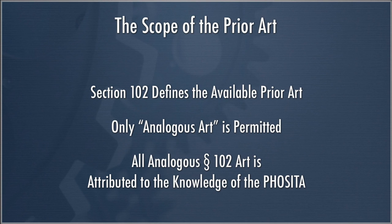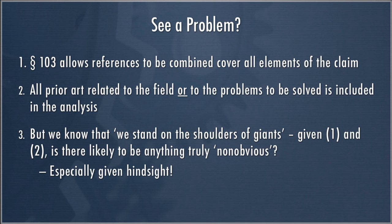Remembering back to KSR, there's a dispute after KSR in terms of how easily you can combine references. The Supreme Court in KSR suggests that the teaching-suggestion-motivation test, when applied rigidly, is no good — though they say it can be a useful analysis. It might not be that you can always combine these references in every case. But it is still good law that all analogous Section 102 art is attributable to the person having ordinary skill. Section 103 allows references to be combined, and all prior art related to the field or to the problems to be solved is included in the analysis.